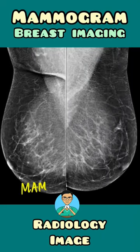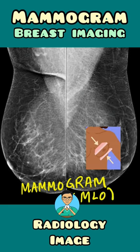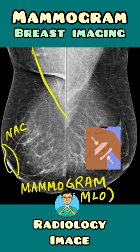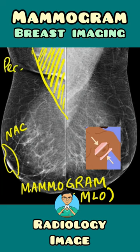This image shows a mammogram, which is a special X-ray for the breast tissue. This view is known as the medial lateral oblique (MLO) view. Here you can see the contour of the breast tissue, the nipple areola complex, and this structure represents the pectoralis major muscle. This is the image of the right breast and this is the left breast.